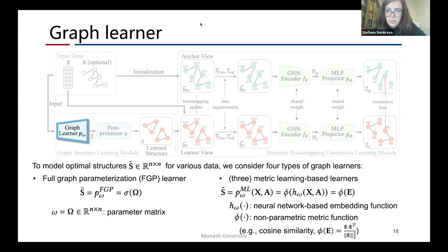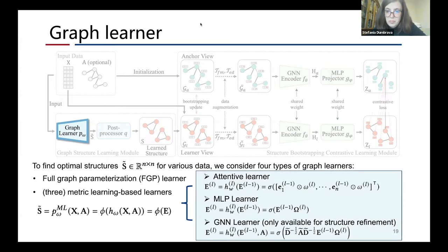In these learners, a neural network-based embedding function H first generates the embedding for each node. Then, a node pair metric function, such as cosine similarity function, is utilized to generate the optimal adjacency matrix from the node embeddings. The difference among three metric learning-based learners is that they use different embedding networks. The attentive learner uses GAT-like self-attention layers to generate the node embedding. The MLP learner uses multiple MLP layers to generate the node embedding, which is more flexible than the attentive one. The GNN learner further considers the original structure information when it is available, where GCN layers are employed to compute the node embedding.